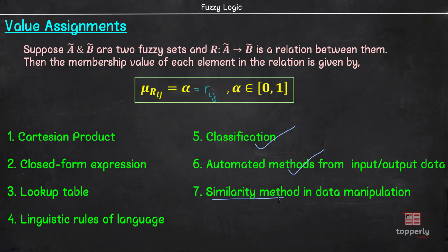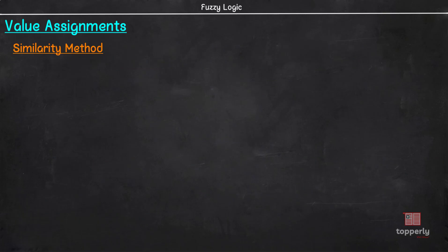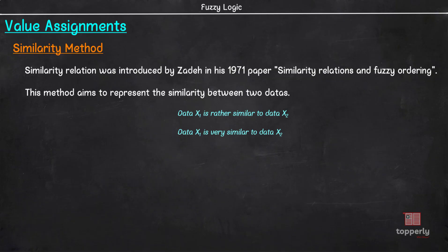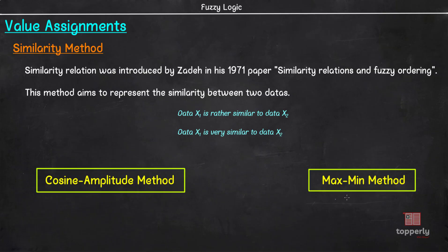Lastly, we have the similarity method. The concept of similarity relation was introduced by Lotfi Zadeh in his 1971 paper, Similarity Relations and Fuzzy Ordering. This method aims to represent the similarity between two datas which can be linguistically expressed as Data X1 is rather similar to Data X2 or Data X1 is very similar to Data X2. Now, there are many methods under the umbrella of similarity methods, but we will study the two most prevalent methods which are Cosine Amplitude and Max-Min method. Let us learn about Cosine Amplitude method first.